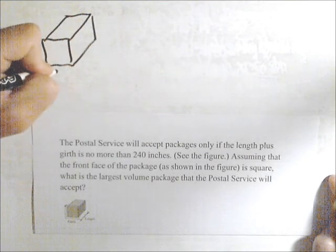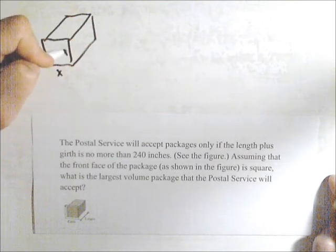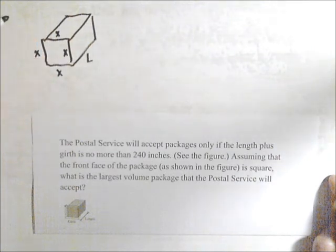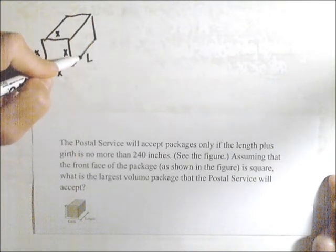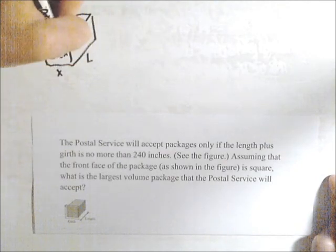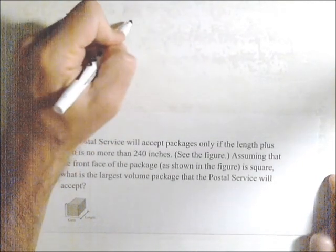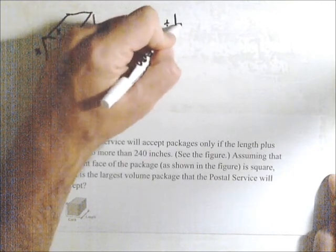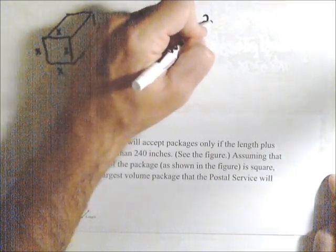So, it's square, so we know that this side's x, this side's x, and this side's x, and then we've got our length, L. So the girth plus the length can be no more than 240 inches, so we have x plus x plus x plus x. Our constraint is that 4x plus L has to equal 240.